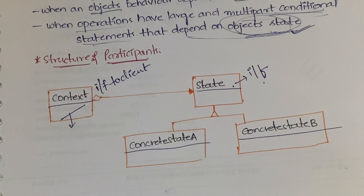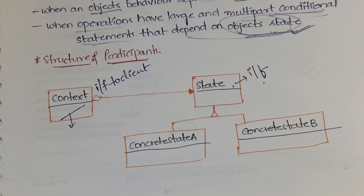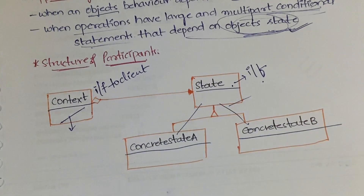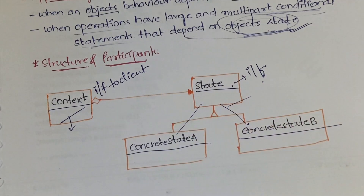In summary: Context defines an interface to the client; State defines an interface to encapsulate behavior for each state; and ConcreteStates are subclasses of State that implement the behavior. This follows the familiar pattern where the parent class defines an interface and subclasses implement it.